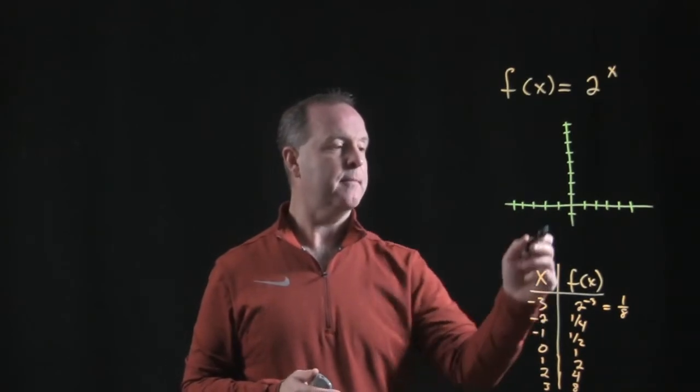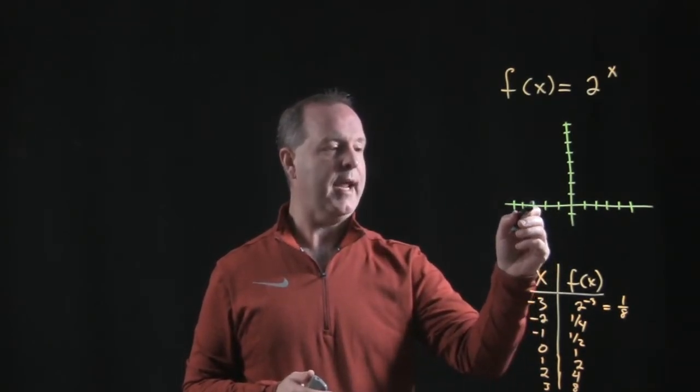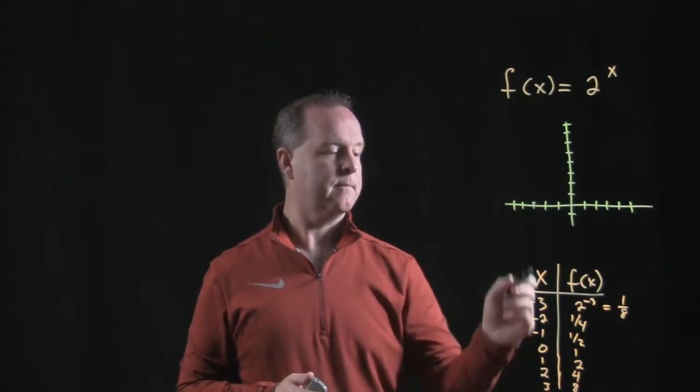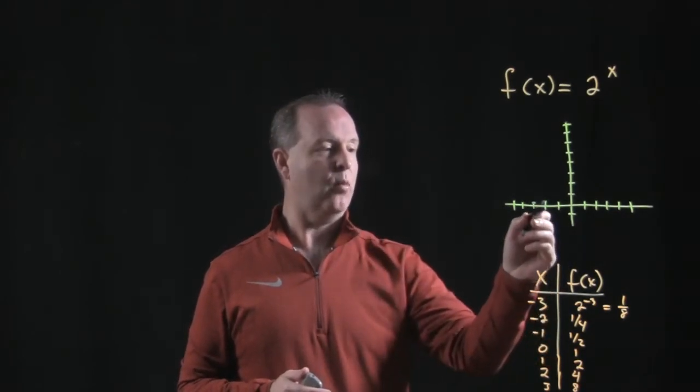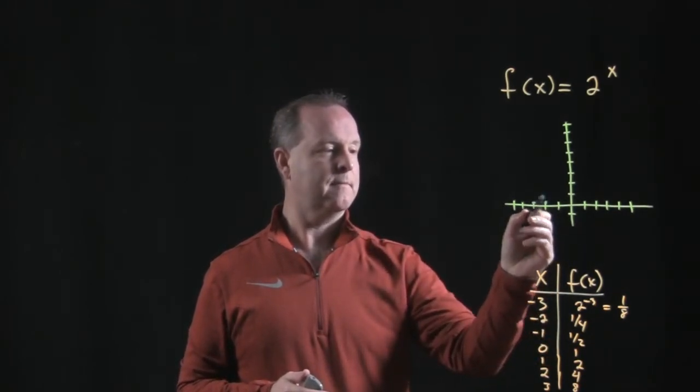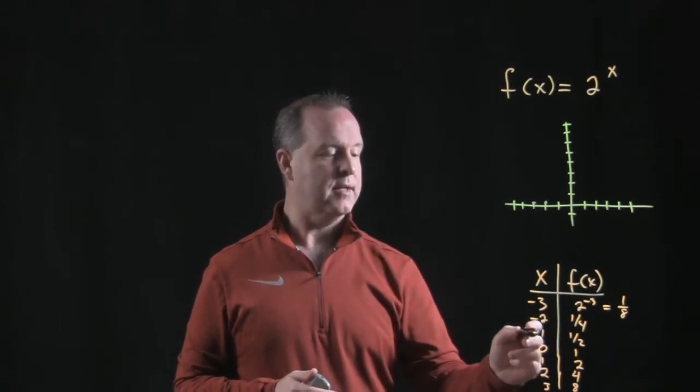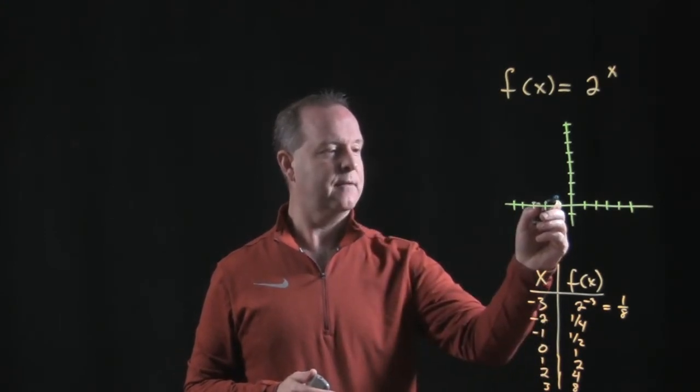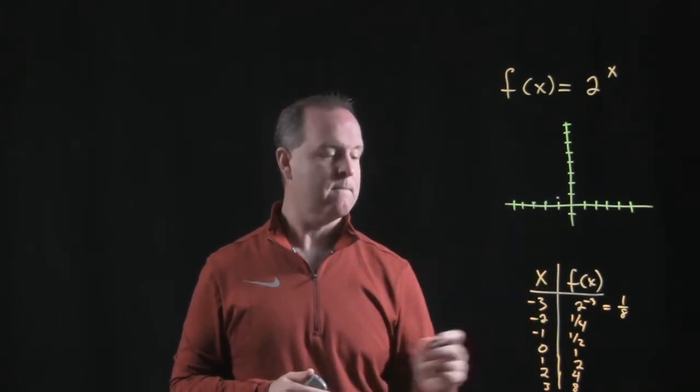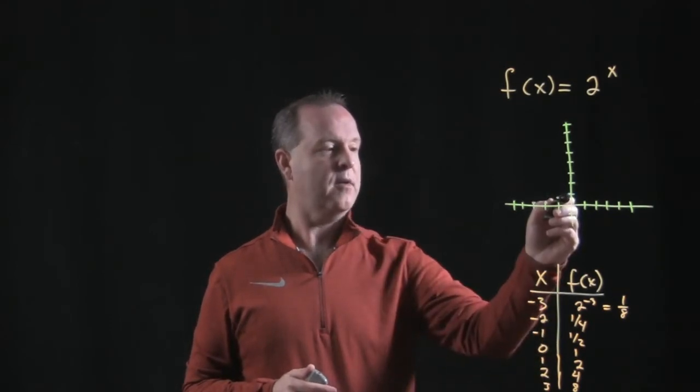So at negative 3, 1, 2, and 3, I'm at 1 eighth. At negative 2, I'm at 1 fourth. At negative 1, I'm at 1 half. At 0, my value is 1.